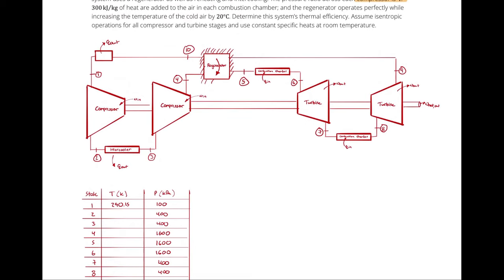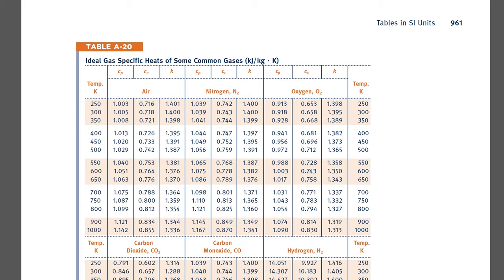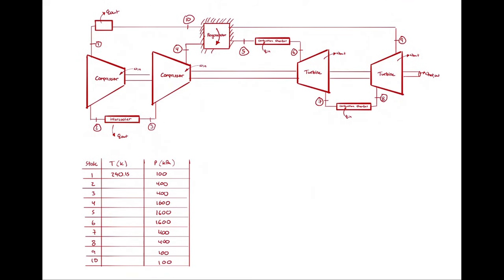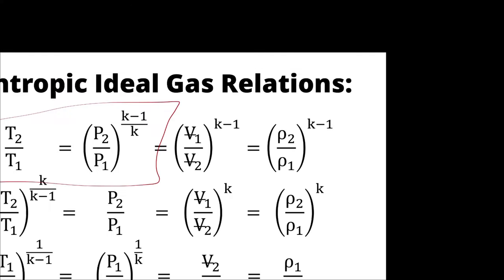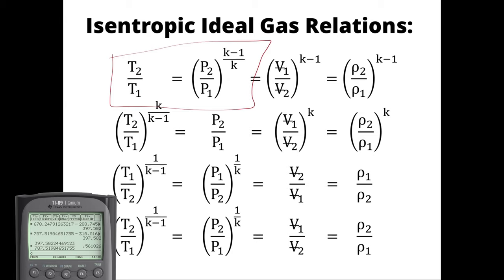With all pressures known, and using constant specific heats at room temperature, we grab air properties at 300 K: Cp = 1.005 kJ/kg·K, Cv = 0.718 kJ/kg·K, and k = 1.4. For the isentropic process from 1 to 2: T2/T1 = (P2/P1)^((k−1)/k). So T2 = 290.15 × 4^(0.4/1.4) = 431.161 K.